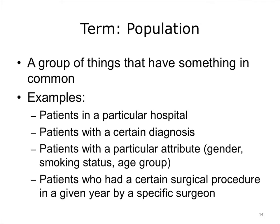First, let's look at the concept of a population. Normally we think of population as the people living in a certain area, but the term population as used in statistics is a group of things that have something in common. While a population does not always have to mean people, it often does. Common examples in healthcare analytics would be all the patients in a hospital, patients with a certain diagnosis, patients with a particular attribute such as gender, smoking status, or age group, or everyone who had a certain surgical procedure in a given year operated on by a specific surgeon.